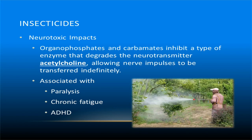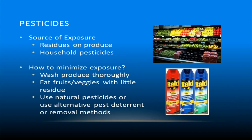A study conducted by the Harvard School of Public Health found that children with high levels of pesticide breakdown products in their bodies were almost twice as likely to develop ADHD as those with undetectable levels. Sources of pesticide exposure include aerosols from spraying of agricultural fields, residues left on produce, and the usage of household pesticides. In order to minimize exposure, wash produce thoroughly, eat fruits and vegetables with little residue, or use natural pesticides or alternative methods for pest removal.